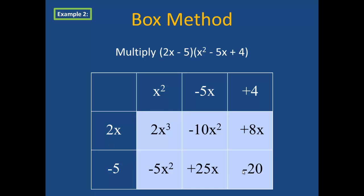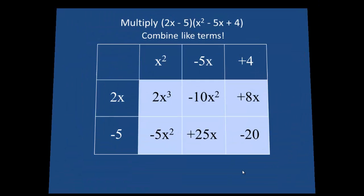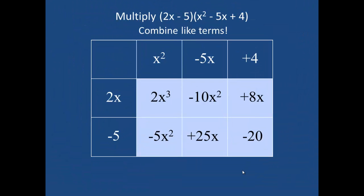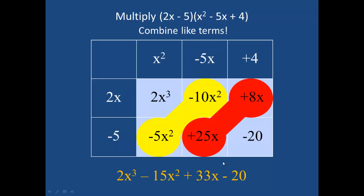So I've now completed the box. While it does take a moment to set the box up, it's very helpful for keeping lots of terms organized. I highly recommend this method. Now that I've completed the box, I'm going to combine like terms, and I have 2 sets of like terms. I have 2 terms with x squared, and 2 terms with an x, so I will combine these for a final product of 2x to the 3rd minus 15x squared plus 33x minus 20. And that completes our example of the box method.